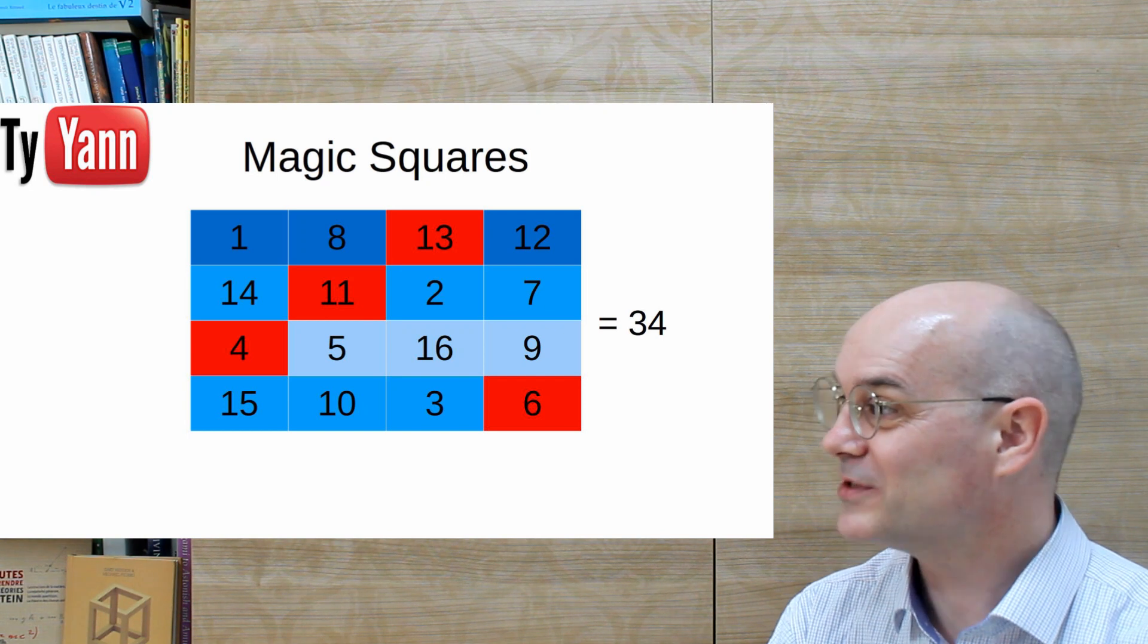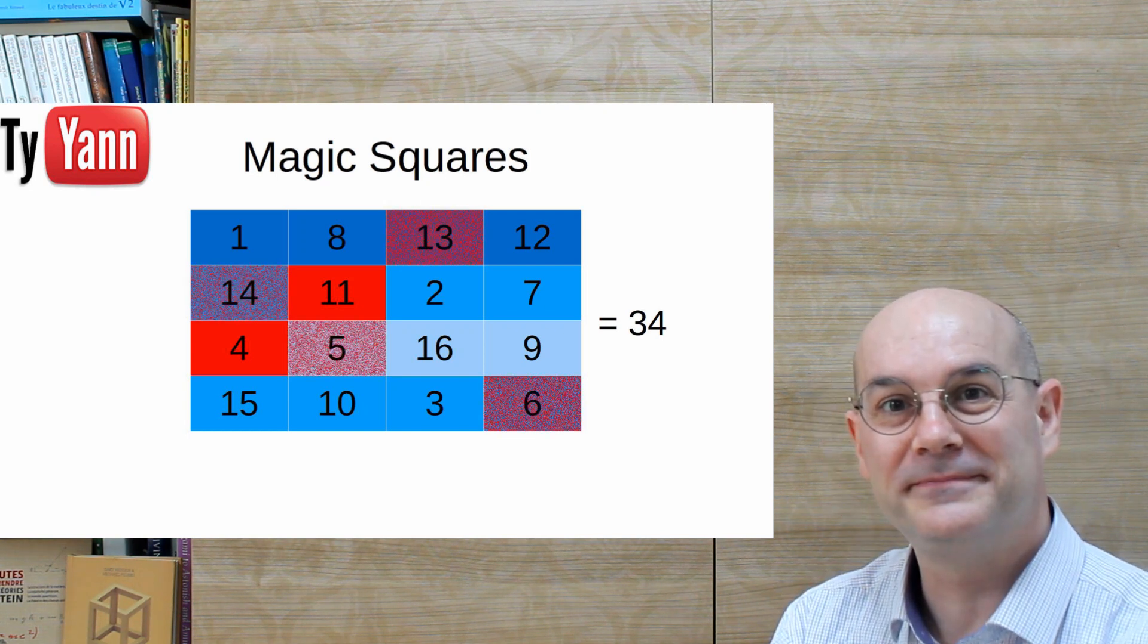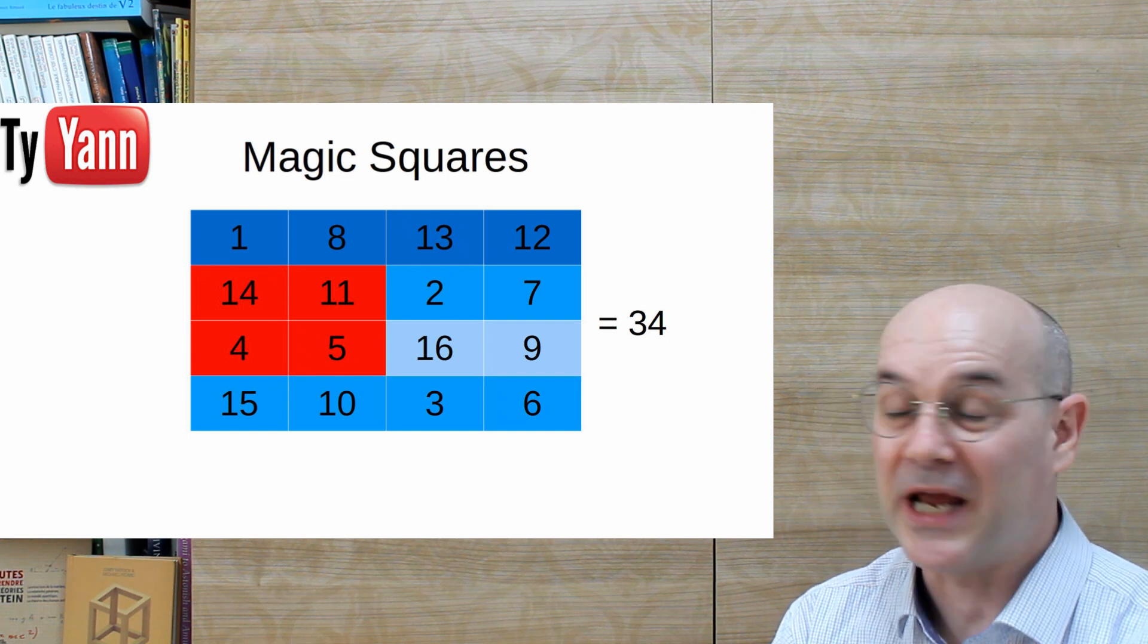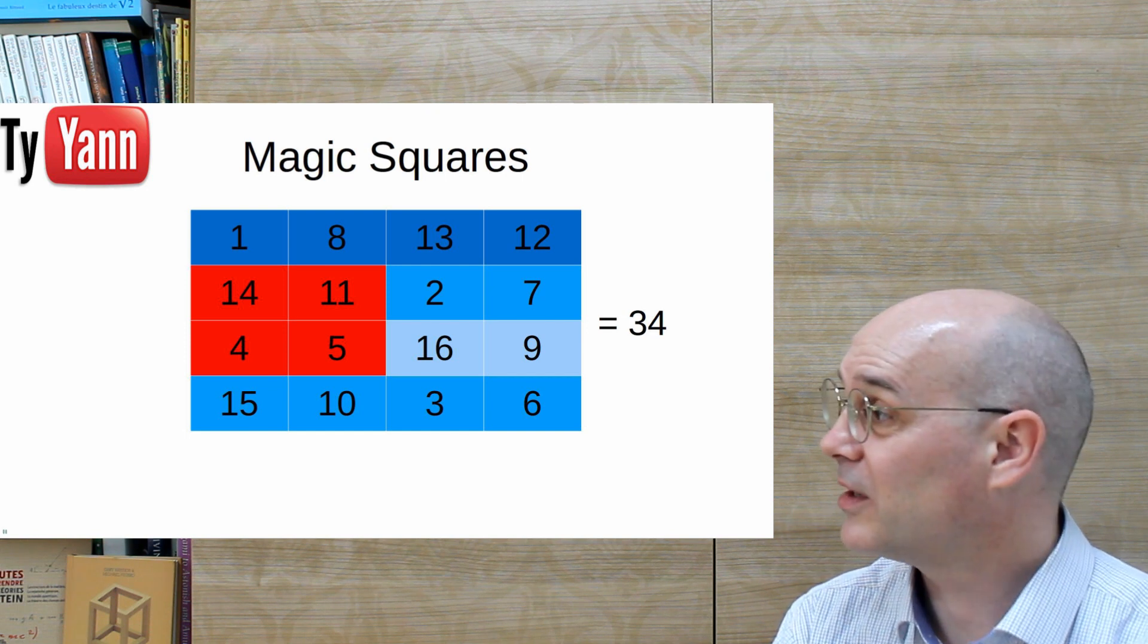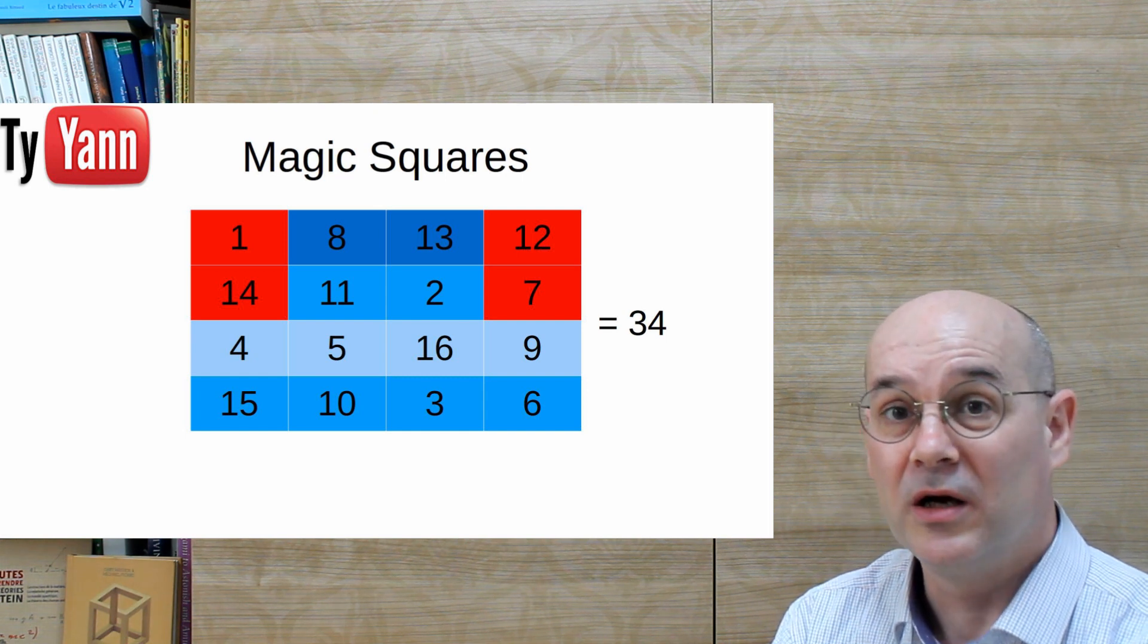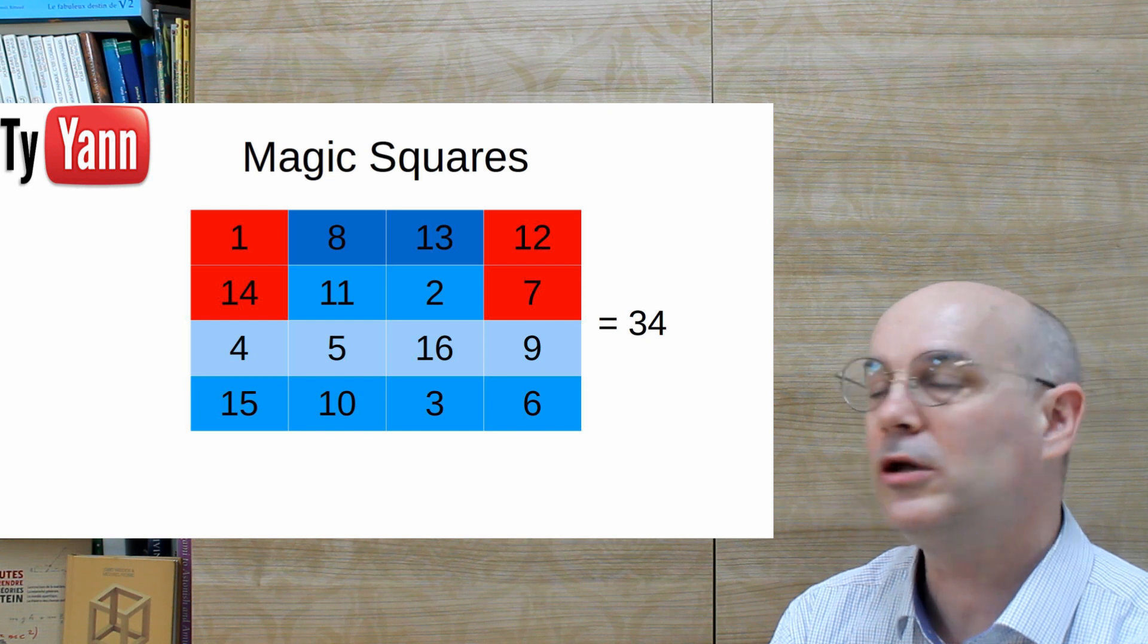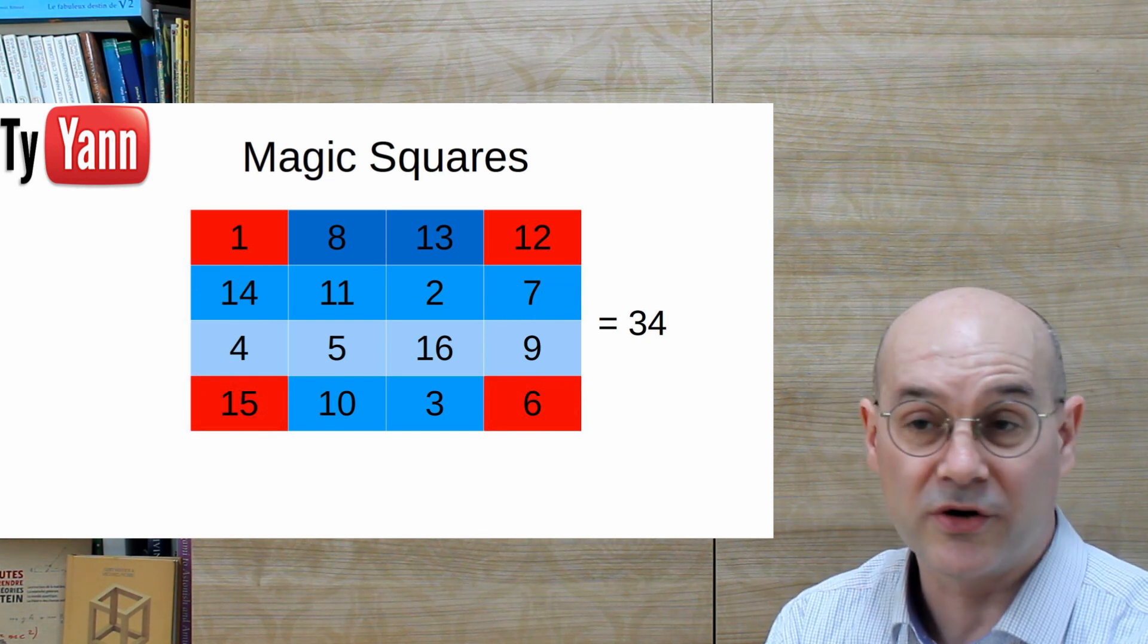But that's not all, because you have also this square, that is equal to 34. And actually, any square, two by two square, you can find in there, is also a magic square. You can wrap around, like here, even go in a little bit higher, and then you get the four corners.